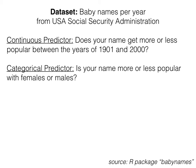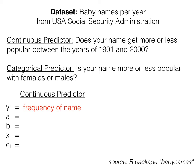So first, let's go over what each part of these models looks like. We'll start with our continuous predictor. Feel free to pause the video now and think about the answer for each of these before clicking play for the answers. Our y1 value is the frequency of our name, or how popular it is in the population.